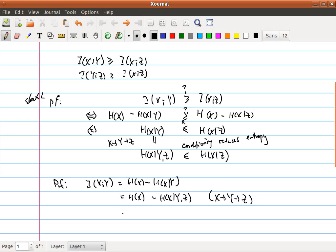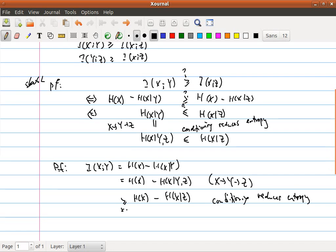And then this is bigger than or equal to H(x) - H(x|z). This is because of conditioning reduces entropy. And this is just I(x;z).